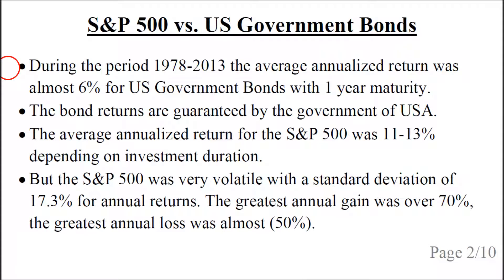During the period 1978 to 2013, the average annualized return was almost 6% for US government bonds with one year maturity. The bond returns are guaranteed by the government of the United States.